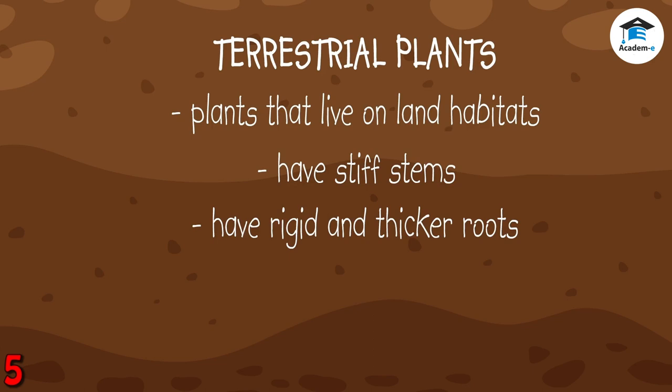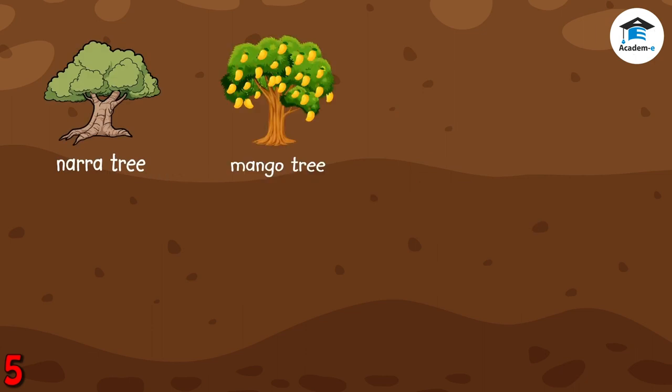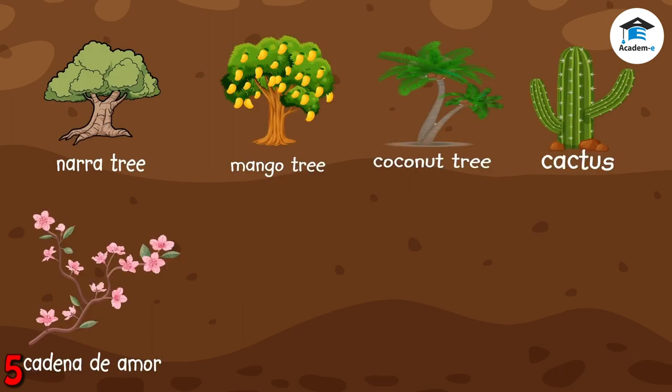Plants that grow in shaded areas have larger leaves because there is not much sunlight that will dry out the water from them. Other terrestrial plants have tendrils that allow them to cling or climb up on a support to reach direct sunlight. Examples of terrestrial plants are narra tree, mango tree, coconut tree, cactus, cadena de amor, rose, petai, and squash.